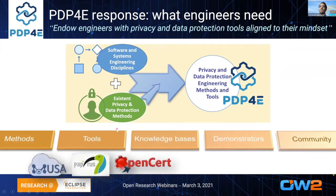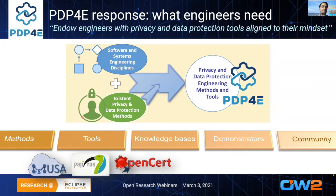We have also provided a set of demonstrators in two domains targeting energy and connected vehicles. The tools include well-known tools in the Eclipse community — for instance, Papyrus for modeling and OpenSource for assurance, which is a risk management tool. We want to make them available to the community, mostly as open source projects, so that they can apply the established practices from privacy and data protection research into daily activities and tools. The approach we follow in our development is that of model-driven engineering.